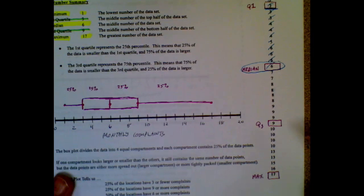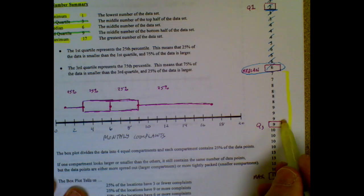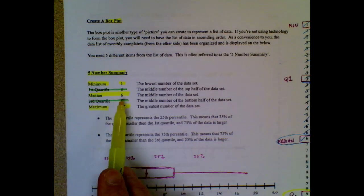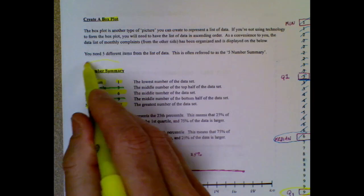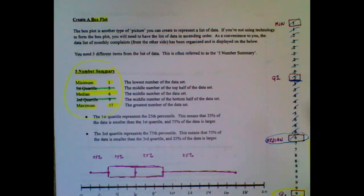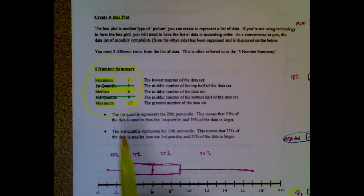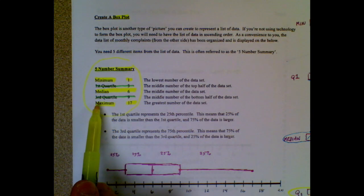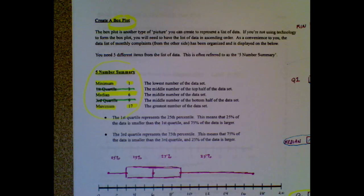If I did the same thing with this bottom half of the data set, I would come up with the middle of the bottom half being the third quartile, and that's a nine. This is called my five number summary. It comes from this data list that's been put in order, and it's basically the five important numbers that are going to go into creating the box plot here in a moment.